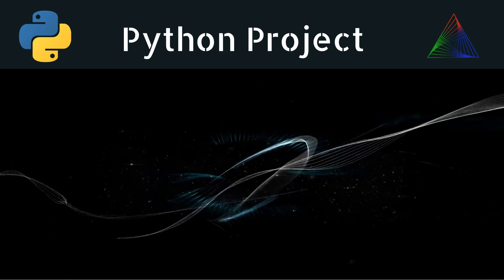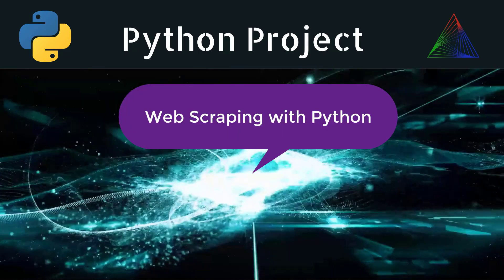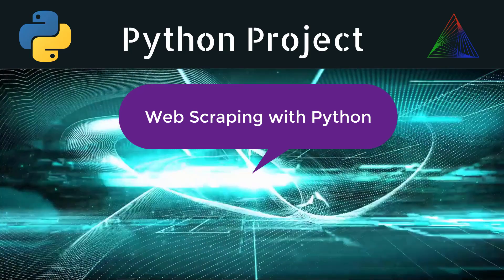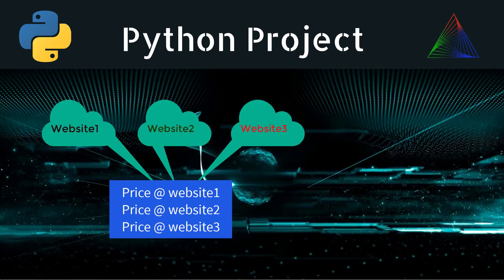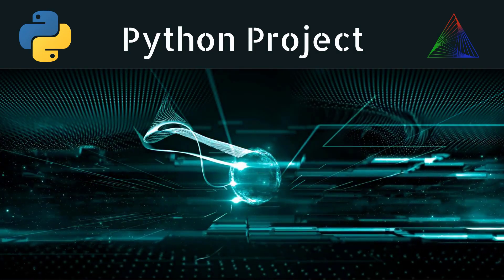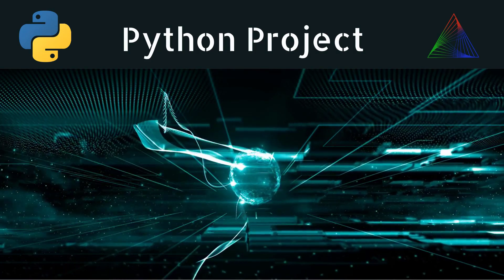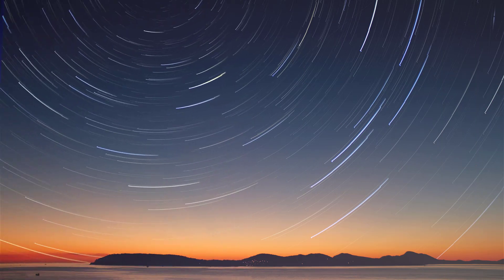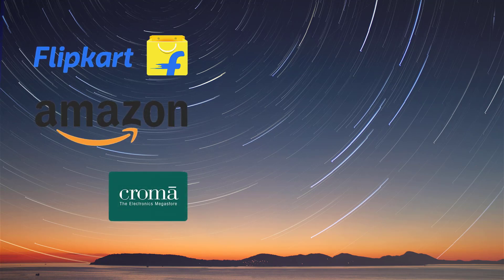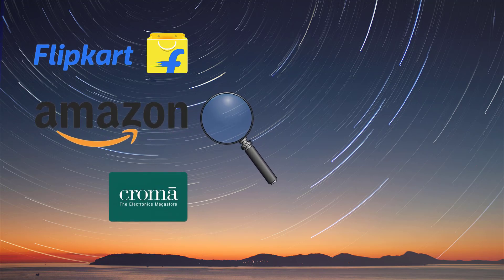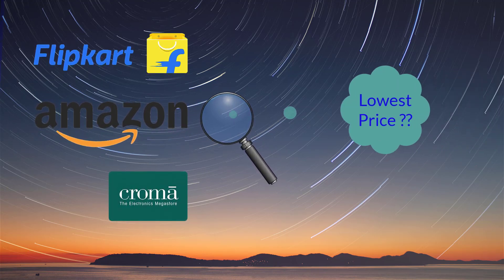Hey everyone, welcome to AI Python. We have a new Python project on web scraping. In this video we are going to learn to compare the price of a product from multiple e-commerce websites. This is a very practical example — in our daily life we also try to compare the price of a particular product from multiple sources like Flipkart, Amazon, Croma, or other websites, and figure out which website has the lowest price.